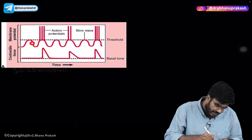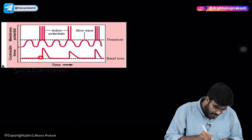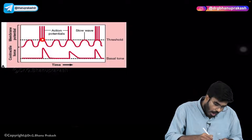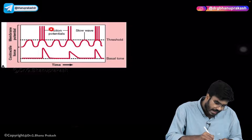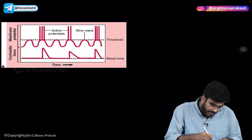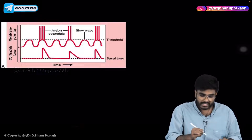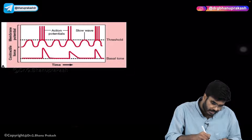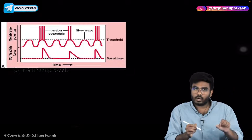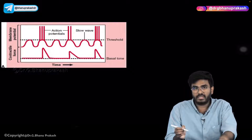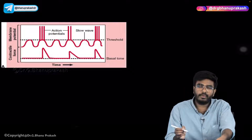Whenever the parasympathetic nervous system is activated, spike potentials appear on top of the BER — these are the action potentials. Whenever there is an action potential, contraction immediately increases. The more the number of spikes, the more powerful will be the contraction. For example, with only two action potentials there is a small wave — a little contraction. More spike potentials means more powerful and more tonic contraction.